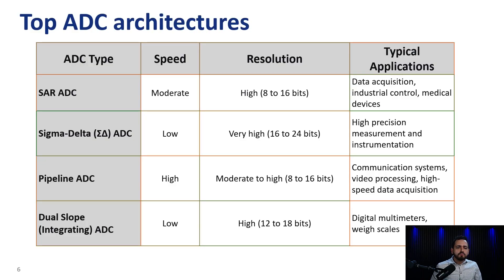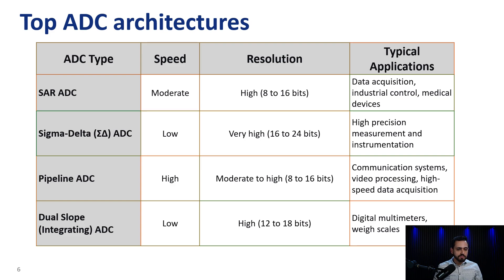Now that we've talked about basic ADC operation, let's talk about the top popular ADC architectures and types. This is a very basic and simplified table. In this table, you can see different ADC architectures, their main differences in terms of speed and resolution, and some typical applications for each of them. This is a simplified overview that includes some of the more popular types of ADC, but there are more different types available in the market.